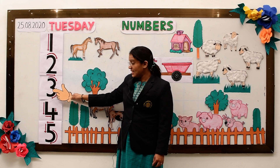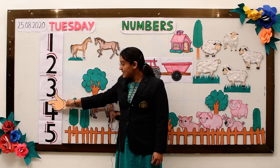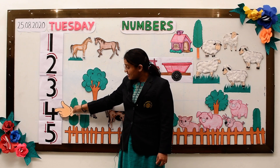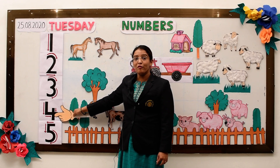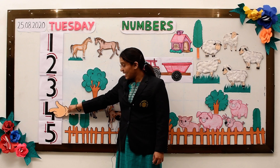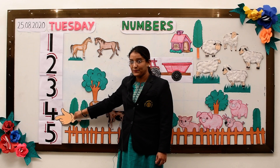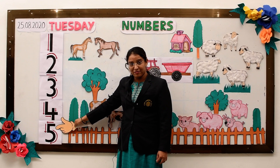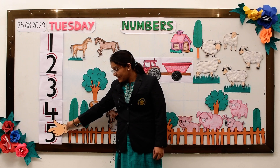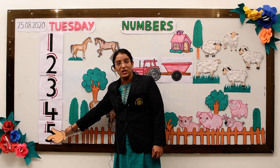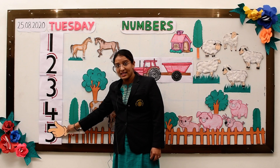The next number is number 4. The formation of number 4 is a standing line, a sleeping line, and a standing line in between the sleeping line. Next the number 5. The formation of number 5 is a sleeping line, a standing line, and a curve.